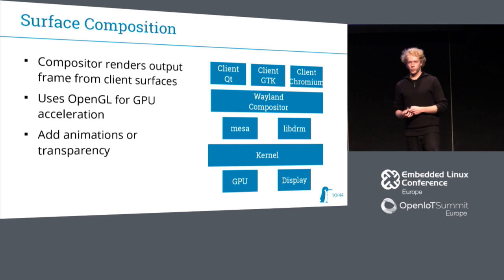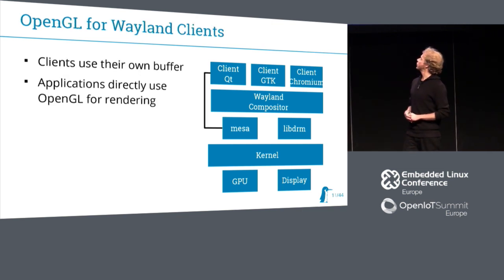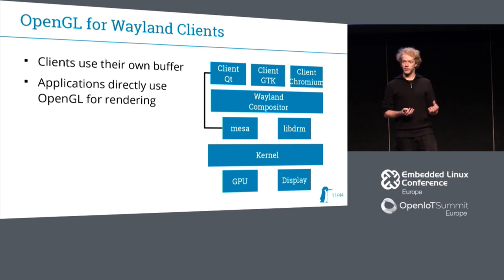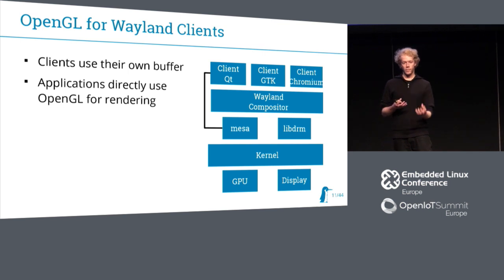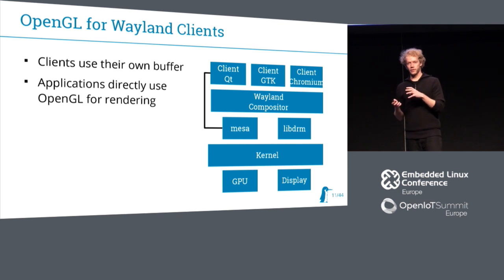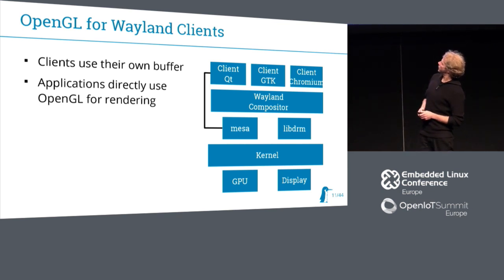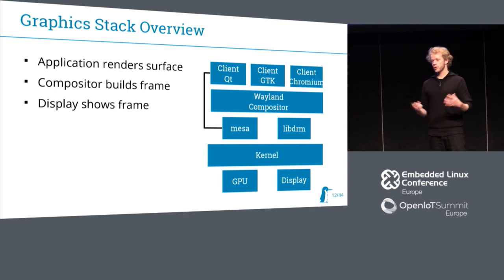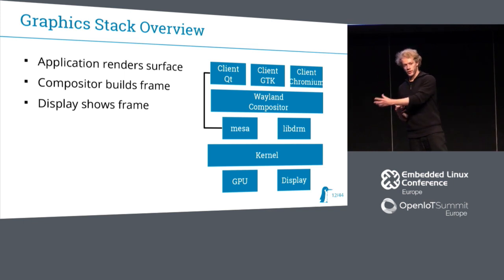If your client uses OpenGL as well, it bypasses the compositor and uses Mesa directly. That's something that's different in Wayland compared to X11. The output of your client belongs to the client — it renders into it and passes this output to the compositor, which then creates the final frame. As a final overview, we have clients that render their surface, the compositor composites it together, and then forwards it to the display driver, which displays it.